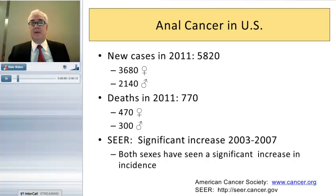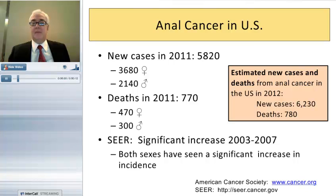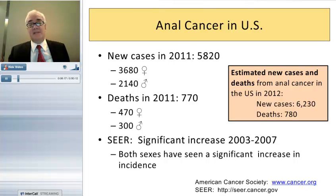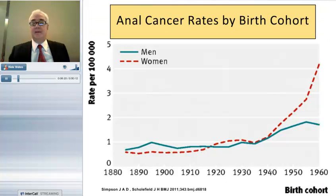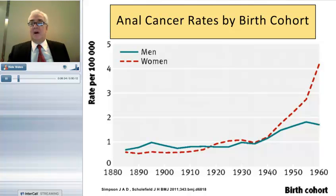The American Cancer Society estimates that in 2012 there will be 6,230 cases of anal cancer and 780 deaths. The risk of anal cancer also depends significantly on birth cohort — incidence is highest in those born from 1950 onward, with a fairly substantial increase, most pronounced in women. There is an increase in men as well, but it isn't quite as pronounced.